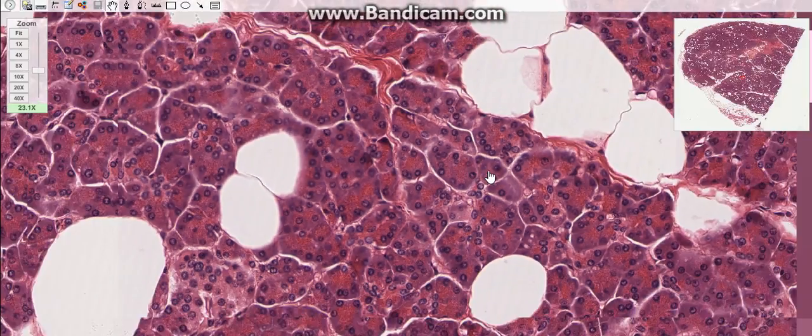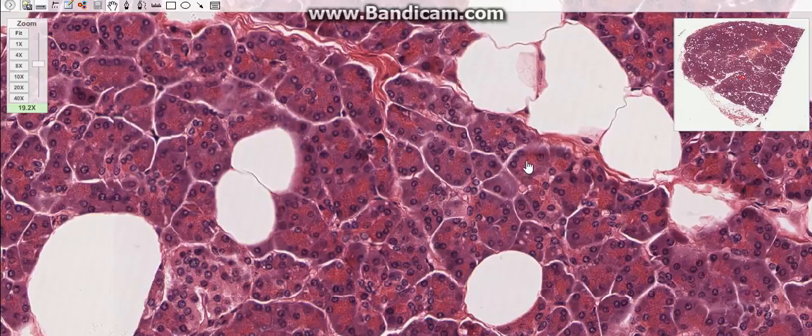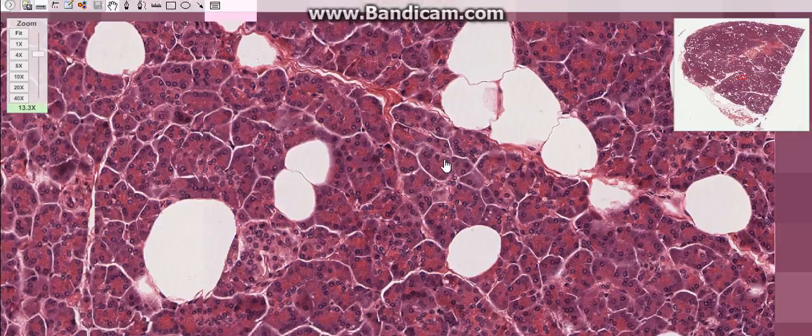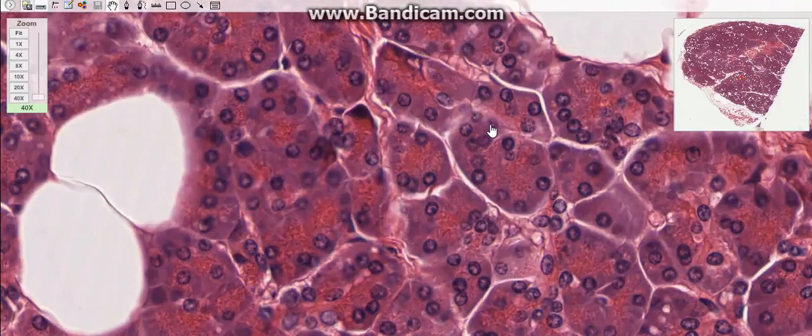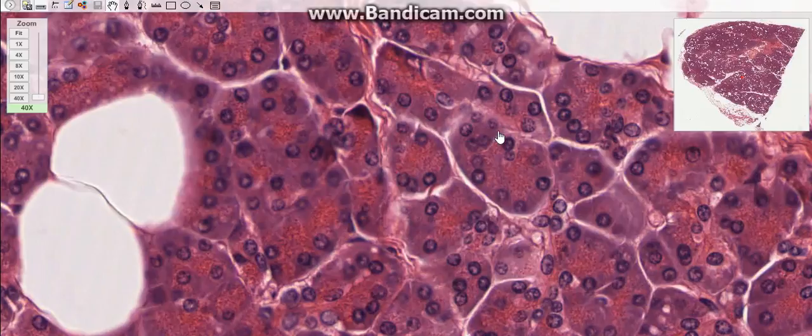The central acinar cells are very small and flattened with pale cytoplasm. They are situated in the center of the acinus and represent the terminal lining cells of intercalated ducts.